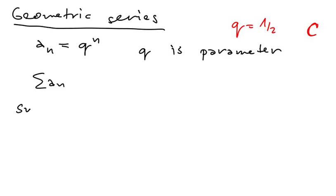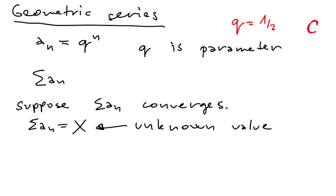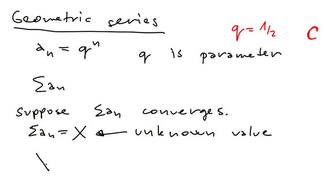So we can work like this. Suppose that sum aₙ converges. So then sum aₙ is equal to some value x. So this value x is unknown. But what does it hold? If we take x and multiply it by q, then we have x is equal to a₁ plus a₂ plus a₃.